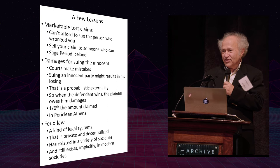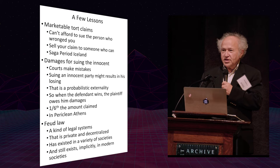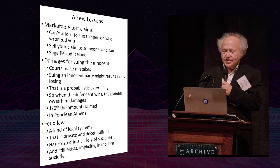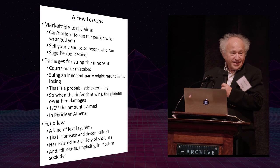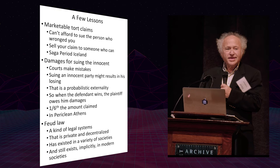Damages for suing the innocent. Given that courts make mistakes, suing an innocent party might result in his losing, and thus is a probabilistic externality. You've done nothing wrong. I claim you've done something wrong because I want to collect damages. There's a ten percent chance the court will make a mistake and convict me. Therefore, if I really am innocent, that's an externality of ten percent of my costs.